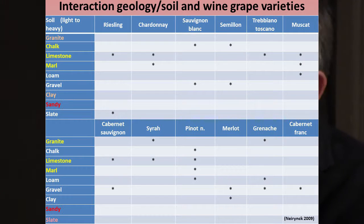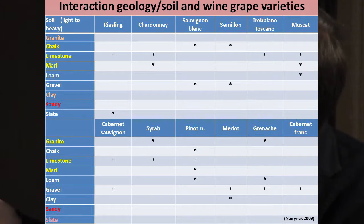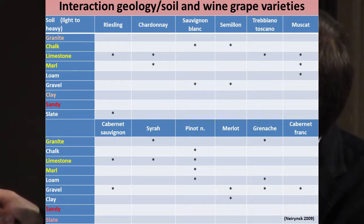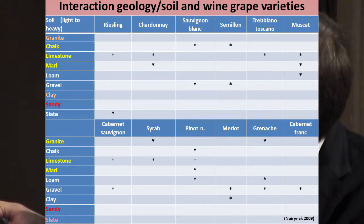Moving to the red variety, we have a wide range of different kinds of soil that can give us a good result. For example, there are granites, limestone, marl, loam and even gravel. As I showed you before, sandy soils — also according to these authors — are not the best to have maximum quality in red or white variety.